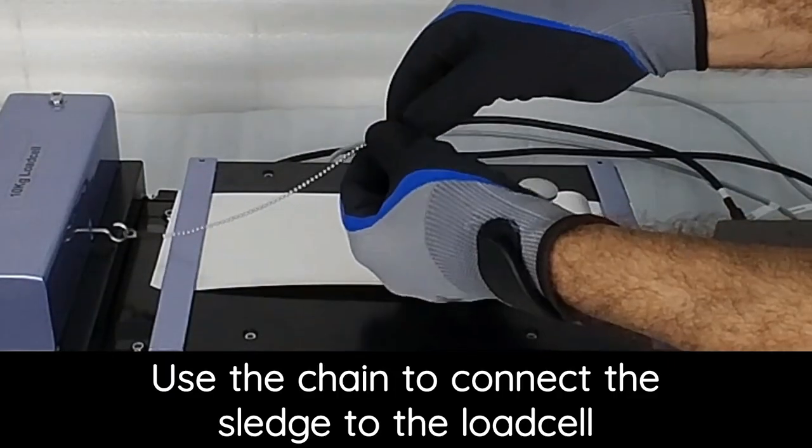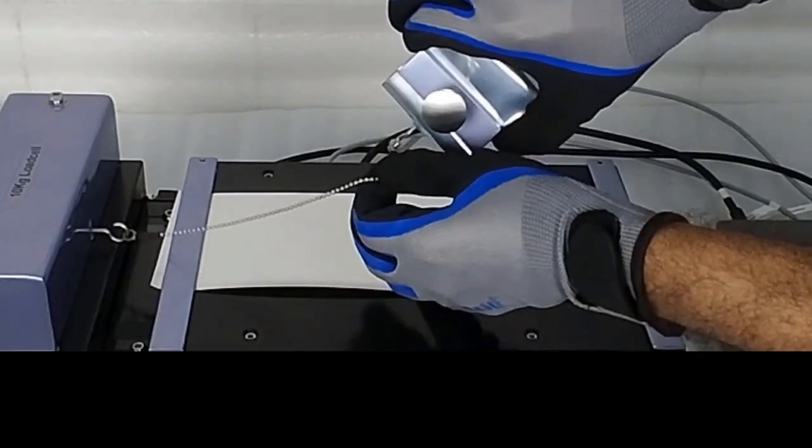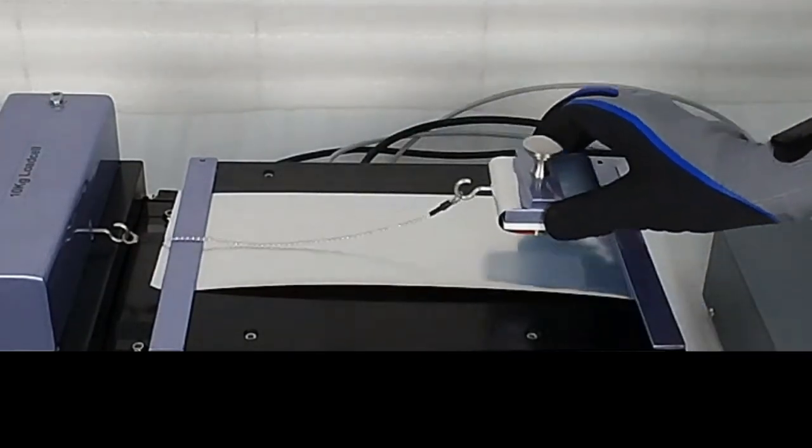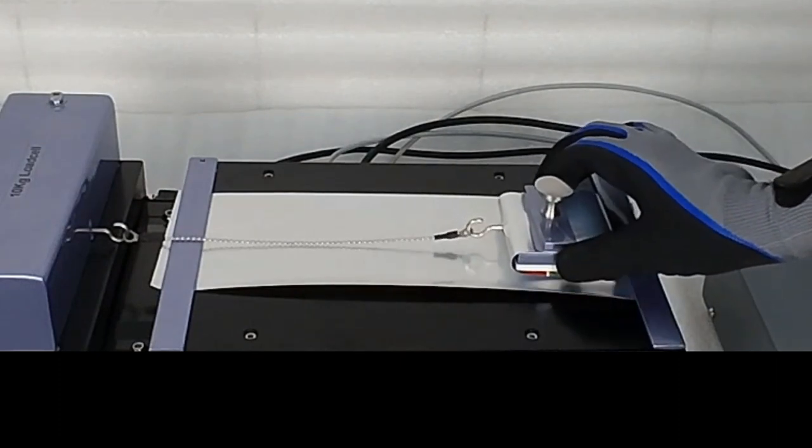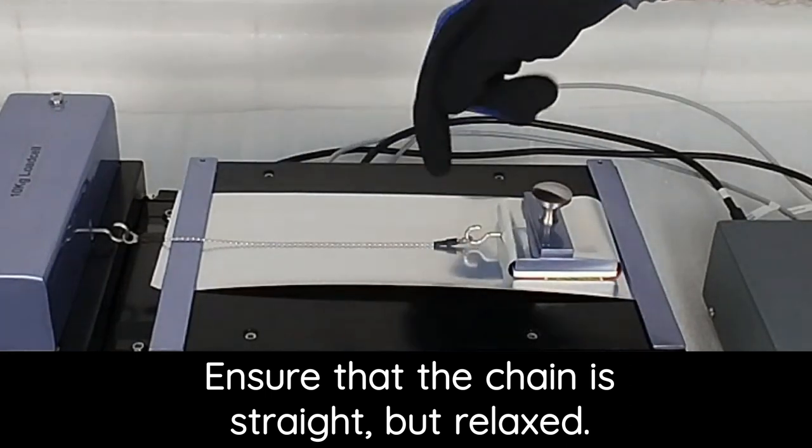Use the chain to connect the sledge to the load cell. Ensure that the chain is straight, but relaxed.